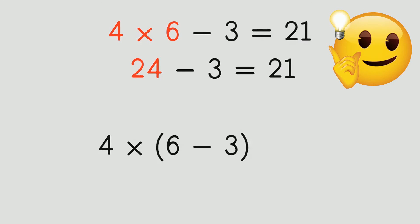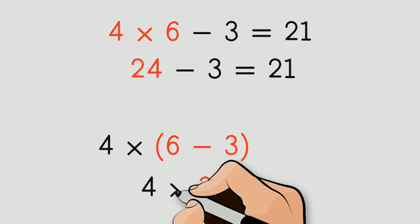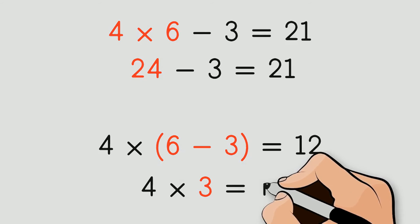That's right! We must solve what's in the parentheses first. This time, we first solve 6 minus 3, which is 3. And then we multiply 3 times 4, giving us 12 as a result.